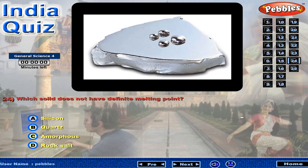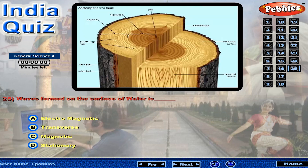The solid does not have a definite melting point. Waves formed on the surface of water are?